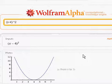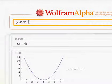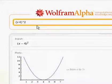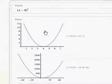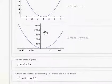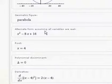And let's take a look at that from WolframAlpha. X minus 4 to the second power creates a parabola for us that looks like that. And hopefully it's going to show us the alternate form, which it does right there: X squared minus 8X plus 16.